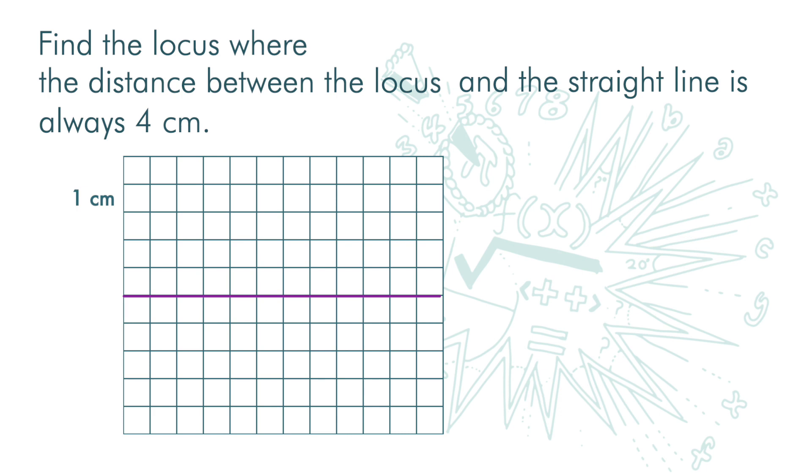How do we measure the distance of a point from a line? If we have a slanting line and a point here, what is the distance between the point and this slanting line? Would it be this one, or this one?